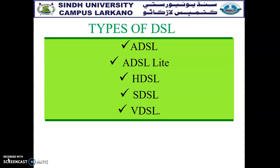That is why another technology is used: HDSL — High Bit Rate Digital Subscriber Line. HDSL was designed as an alternative that uses the Alternate Mark Inversion (AMI) encoding scheme for higher frequencies and reduces the attenuation between the noise.